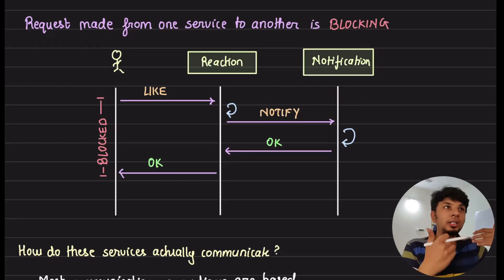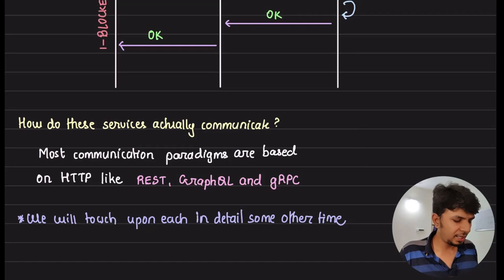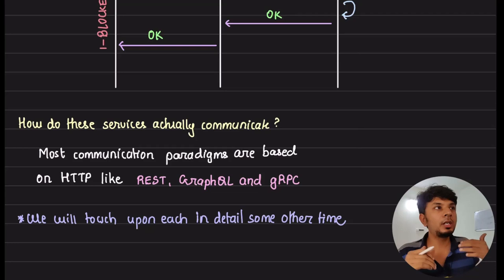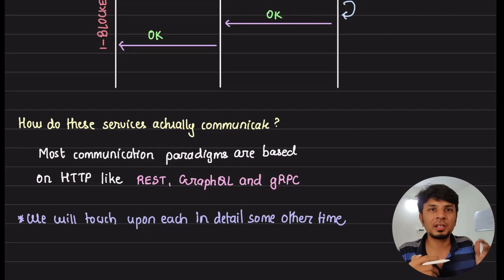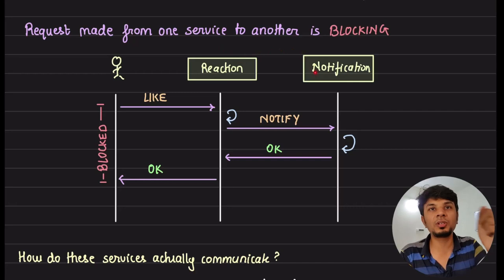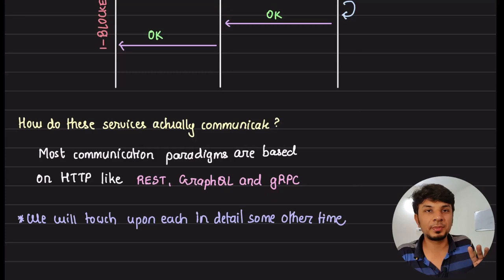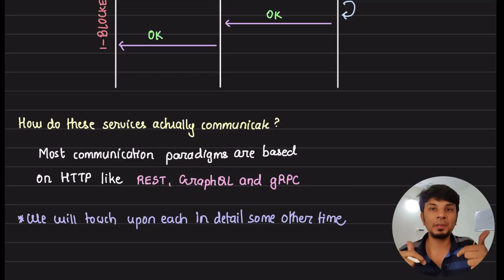This is a classical case of synchronous communication and a blocking call — your main API is blocked until all synchronous communication is done. This guarantees completeness: whenever a user hits the like button, the other user definitely gets notified, otherwise the like does not complete. Most synchronous communication today is built on HTTP — with REST-based endpoints, GraphQL, and gRPC being the three most common approaches, all built on top of TCP.